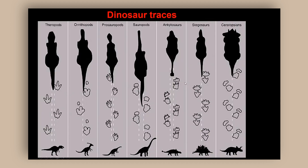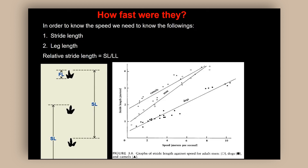There are different kinds of dinosaurs which leave different kinds of footprints. Moving to the next slide, you will find that stride length tells us something about whether a dinosaur is walking or running. But because animals are very different and have different heights, we have to calculate the relative stride length, which we do by dividing stride length by the leg length. Leg length can be calculated by looking at the foot impression.